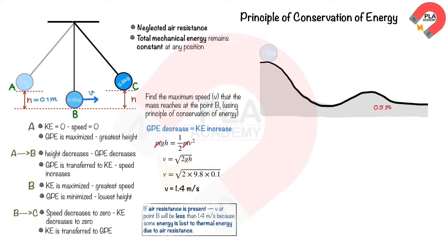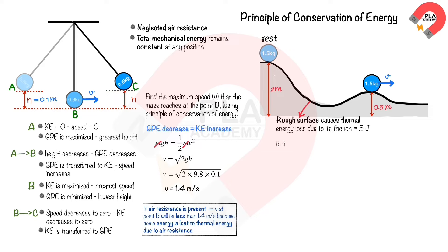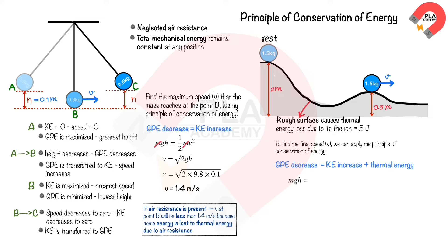In another scenario, a ball with a mass of 1.5 kg rolls downward from a height of 2 meters to a height of 0.5 meters along a given path. We assume thermal energy losses due to friction of 5 Joules at the final speed v. Applying conservation of energy, the decrease in gravitational potential energy equals the increase in both kinetic energy and thermal energy: mgh = ½mv² + thermal energy lost. Substituting m = 1.5, g = 9.8, h = 2 − 0.5, and thermal energy lost = 5, we find v = 4.8 m/s.